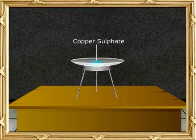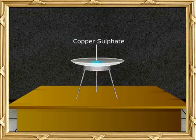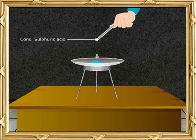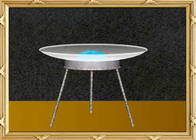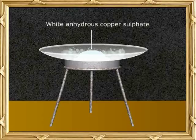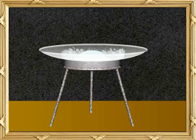Do you think the color of blue copper sulfate can vanish on adding concentrated sulfuric acid? Take a small amount of blue crystalline copper sulfate pentahydrate and add a few drops of concentrated sulfuric acid. Blue copper sulfate pentahydrate becomes white anhydrous copper sulfate. Sulfuric acid thus removes water of hydration — we can say sulfuric acid absorbs water.